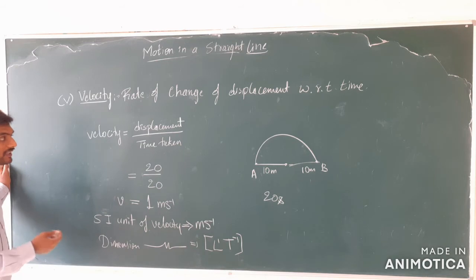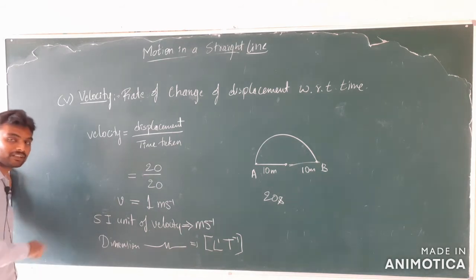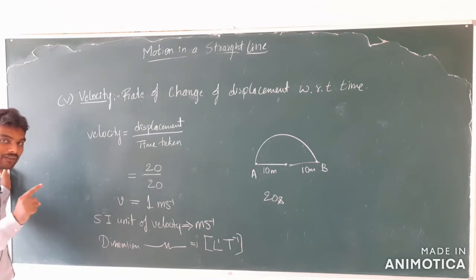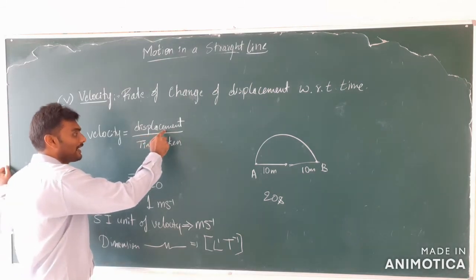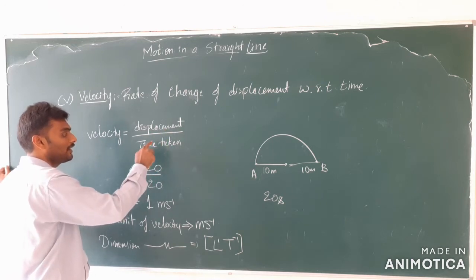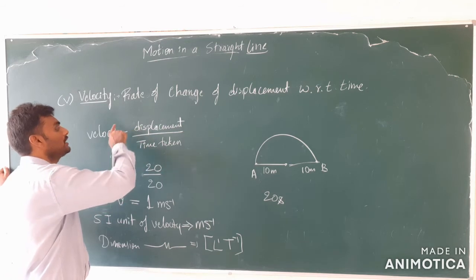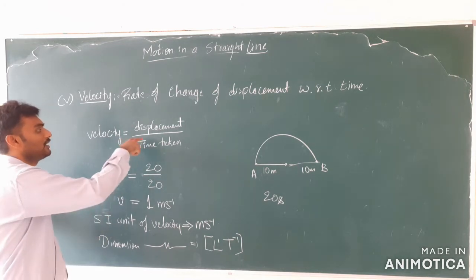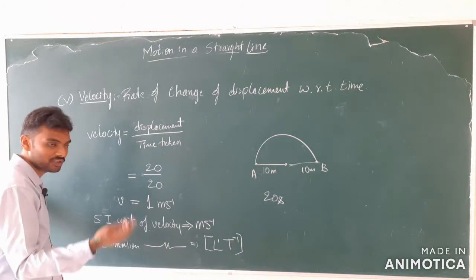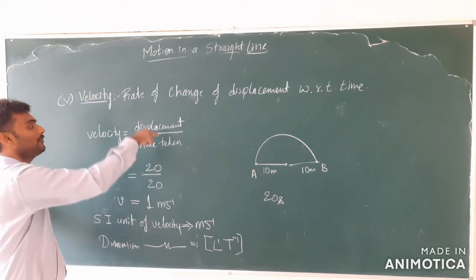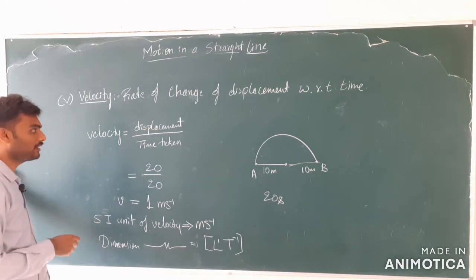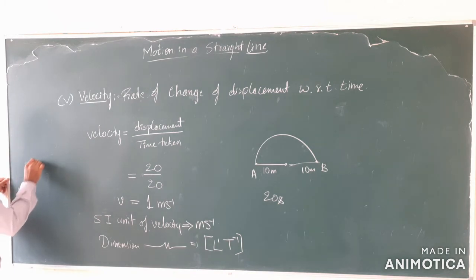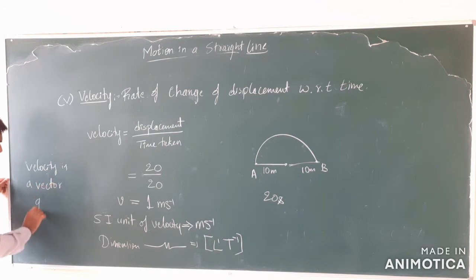What kind of quantity is velocity? All quantities are either scalars or vectors. If they have direction, they are vectors; if not, they are scalars. Since displacement has direction, even though time does not have any direction, velocity will also have the direction of displacement. Therefore velocity is a vector quantity.